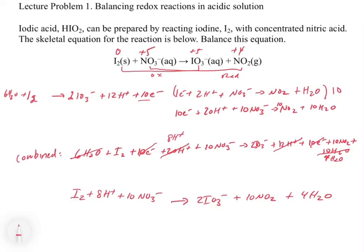We do have to add phase labels. I2 is a solid. H+ is aqueous. NO3 minus is aqueous. IO3 minus is aqueous. NO2 is a gas. H2O is a liquid. So the final balanced reaction is: I2(s) + 8 H+(aq) + 10 NO3-(aq) → 2 IO3-(aq) + 10 NO2(g) + 4 H2O(l).